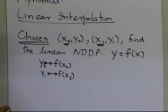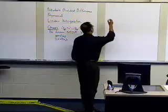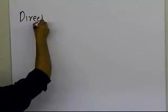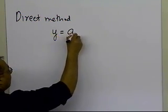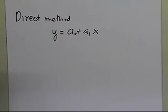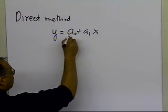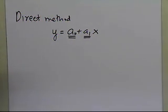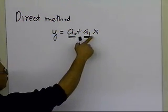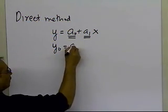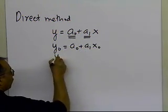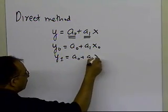Let's see how this method works. If you look at the direct method, you would have chosen the linear interpolant to be y = a0 + a1*x. In that case, a0 and a1 are the two coefficients of the linear interpolant that you need to find. You set up two equations, two unknowns: at x = x0 the value is y0, and y1 = a0 + a1*x1.